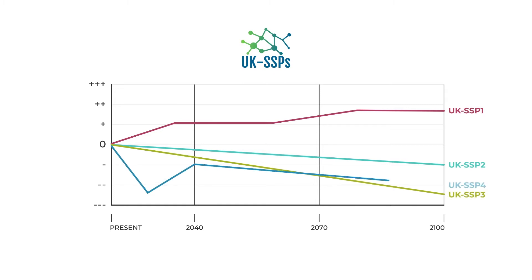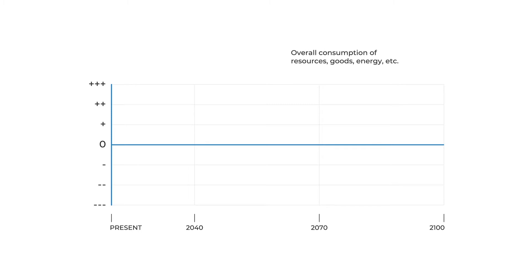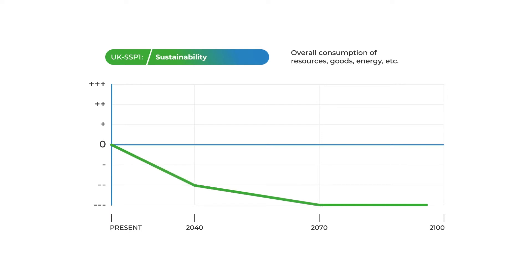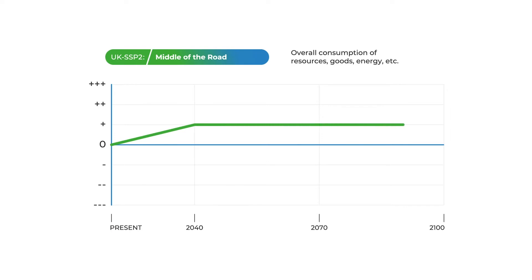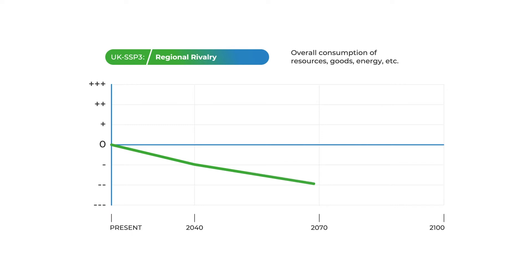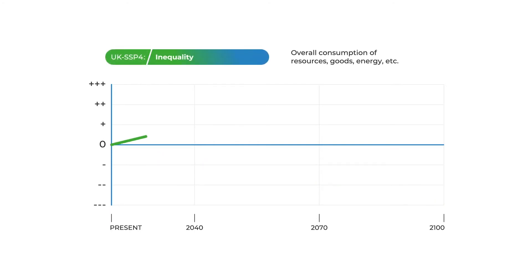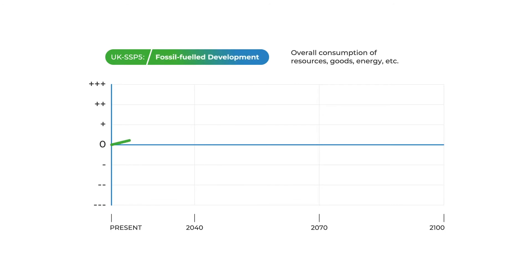The source and rationale for each trend is provided to help understanding and interpretation by modelling teams. Here we show one example for the level of overall consumption by UK society. In UK SSP1, switched welfare economics and sustainable lifestyles lead to a relatively strong and continuous decrease in material consumption. In UK SSP2, society continues to consume unsustainably, but this stabilises due to limited increases in purchasing power. In UK SSP3, material consumption rapidly decreases as barriers to trade limit availability of goods and food, eventually leading to food shortages and malnutrition. In UK SSP4, there is an initial increase in demand, but as society becomes more unequal, an increasing share of the population has less purchasing power. In UK SSP5, a consumeristic society and high economic growth drive both availability and demand increasing substantially.